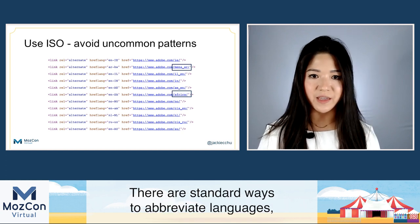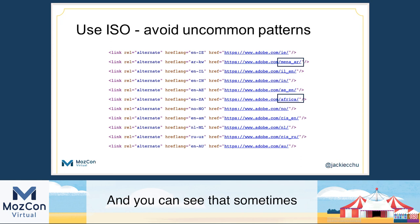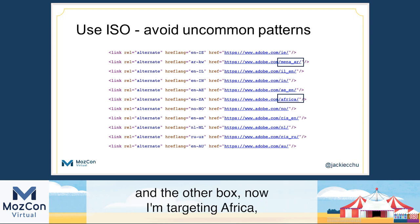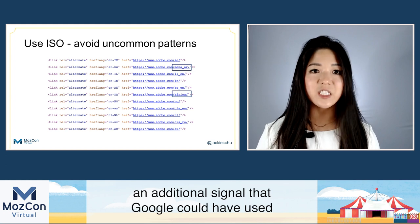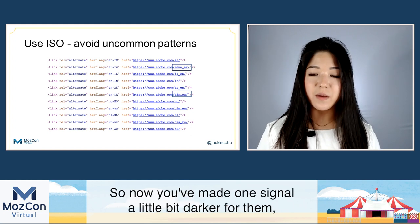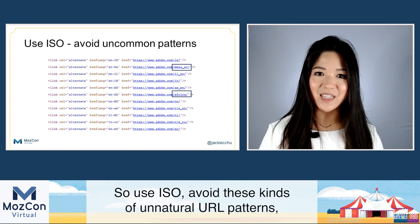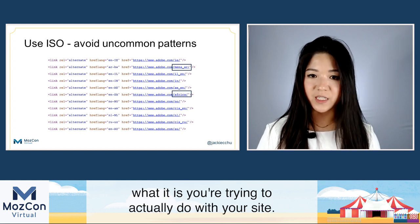Use ISO codes. There are standard ways to abbreviate languages and countries. Looking at Adobe, who suffers from quite a bit of international SEO issues, you can see that sometimes they use the ISO code to designate the country in the URL — like Adobe for IE — but then they have non-ISO designations like a region name for Africa. This inconsistent URL structure means you've lost an additional signal that Google could have used to understand what part of your website is targeting what country. You've made one signal darker for them, allowing them to make more inferences, which generally doesn't work in your favor. Use ISO — don't use unnatural URL patterns.